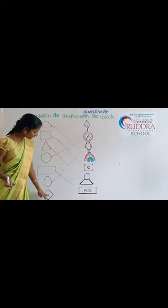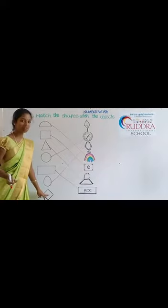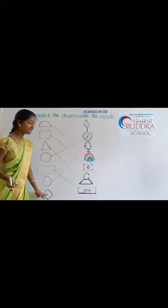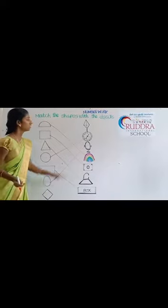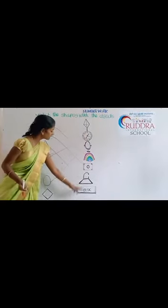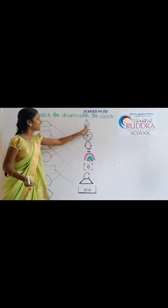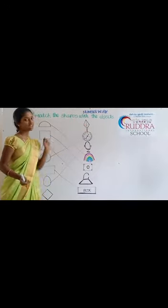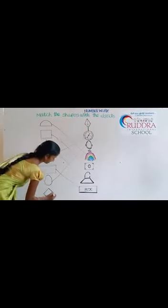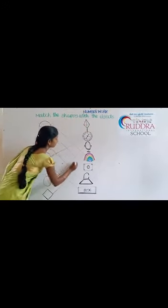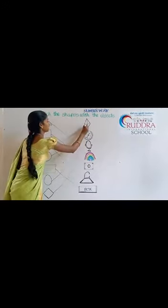Next, what shape is this? This is a diamond shape. Which picture is similar to the diamond shape? Kite. I will draw a line from diamond to kite.